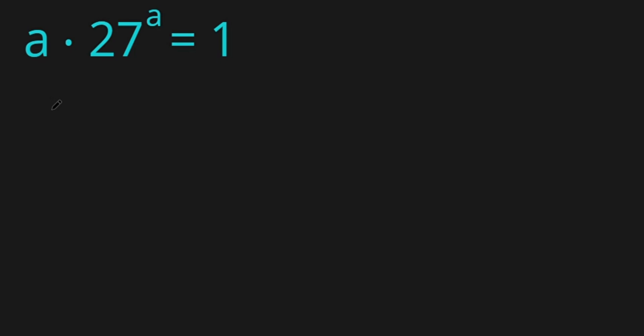We can see that 1 over a equals 27 to the power of a. Now I want to eliminate the exponent a from 27. To do this I'm going to raise both sides to the power of 1 over a.